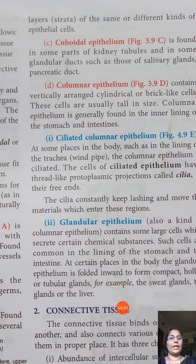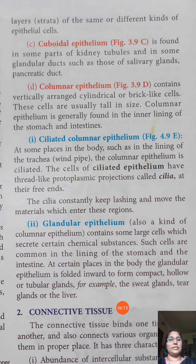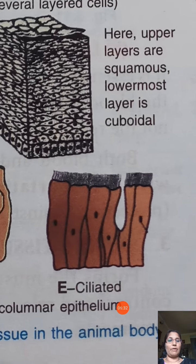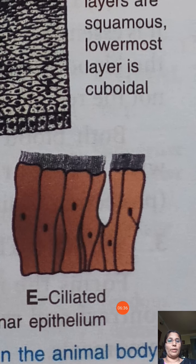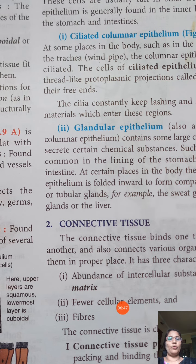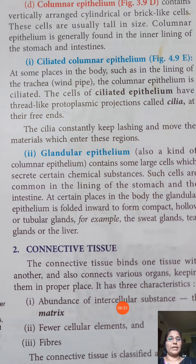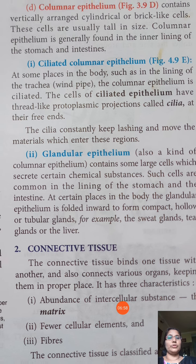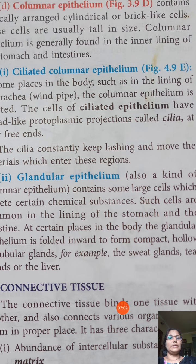Ciliated columnar epithelium is found in the trachea. It secretes mucus so that dust particles are trapped. It has cilia — small hair-like structures — at one end. The cilia, by their movement, direct dust particles entering the trachea toward the throat so we can spit them out.